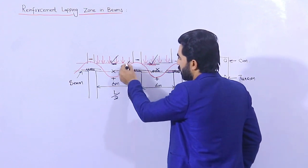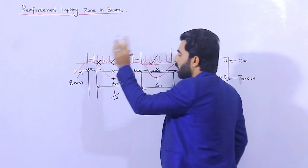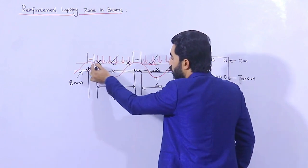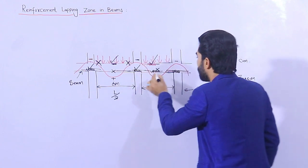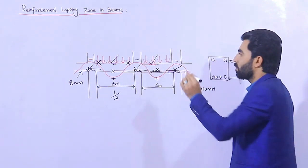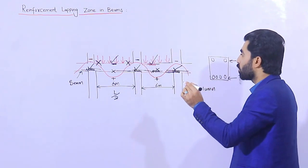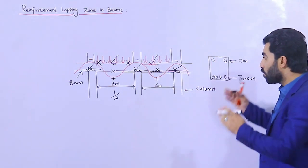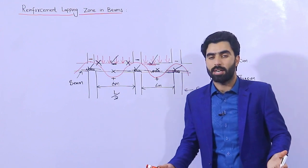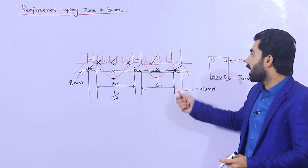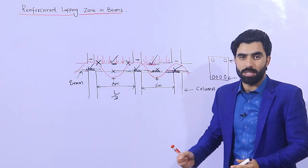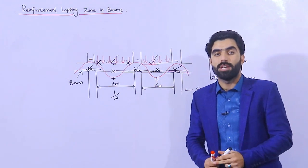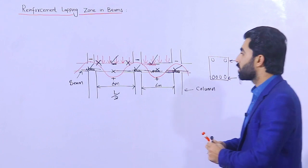You are not allowed to provide lapping at certain places, but you are allowed to provide lapping at the bottom portion — especially in the tension zone — you are allowed to provide it there. But at the middle you are not allowed. Also at the distance of L/4 you are not allowed, because we have positive bending moment there. At the top portion we have negative bending moment. So these are the rules.